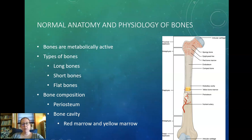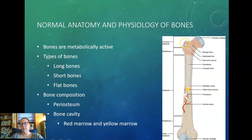The bone is composed of the periosteum, which wraps around the bone and extends into the tendons and ligaments. Then there's compact bone and spongy bone. The spongy bone makes it more lightweight, and compact bone is solid and usually on the edges, giving it strength. Within the bones there is a bone cavity with marrow — red marrow and yellow marrow. Yellow marrow is fat, and red marrow is where red blood cell production happens.